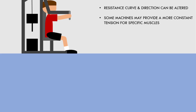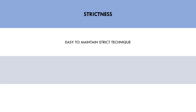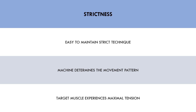The next benefit of machine-based exercises is their ability to maintain strict technique. Because machines only allow a set movement pattern, they make the technique very easy to perform correctly. It is very difficult for trainees to deviate technique, because they simply contract against resistance and the machine determines the movement that occurs. This allows all the stress to be directed to the muscle and not distributed to other muscles or joints. For example, during a leg extension machine, 100% of the stress is placed on the quads, and there is almost no way to compensate with other movements because you are locked in by the seat, backrest, and pad.